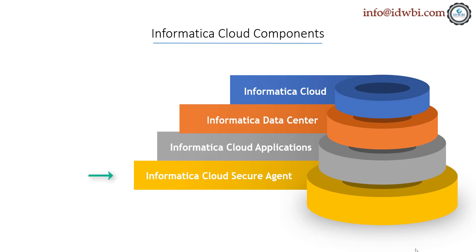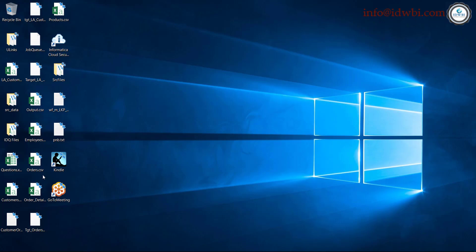The Informatica Cloud Secure Agent is a component or installable of Informatica Cloud which is installed on your on-premise servers or on your local machine. It runs all the tasks and provides firewall access between your on-premise servers and the cloud-based connectivity. Let me show you that.